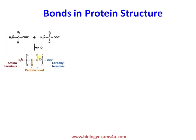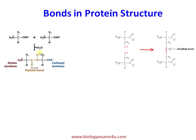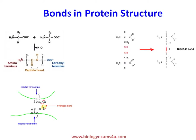The peptide bond is formed between two amino acids and is the major bond in the primary structure. The disulfide bond is formed between sulfur-containing amino acids like cysteine and is involved in secondary structure formation. Hydrogen bonds are present in beta-pleated sheets, joining polypeptide chains from two different strands.